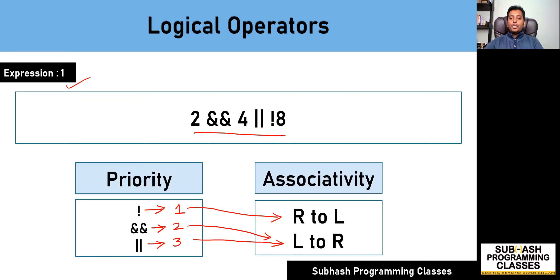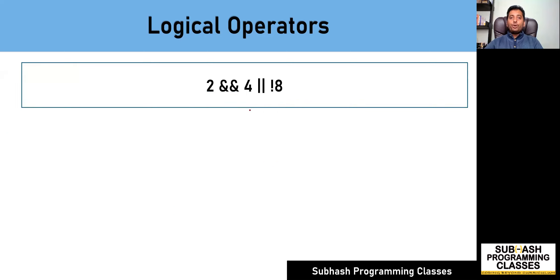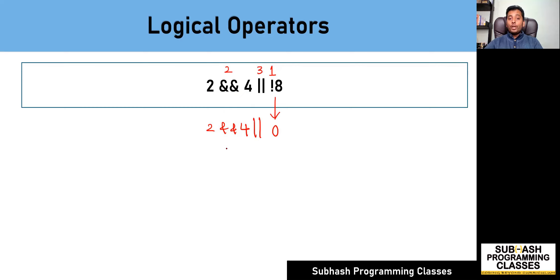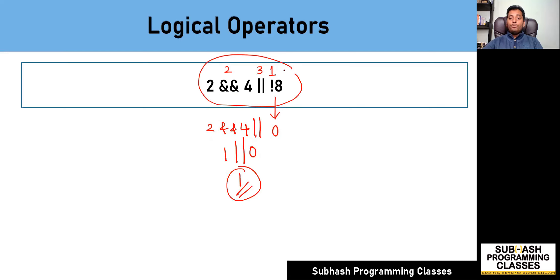Let me evaluate expression one: 2 AND-AND 4 OR with logical NOT of 8. Since NOT has the highest priority, I first evaluate NOT of 8 — a non-zero value — which gives 0. Now the expression becomes: 2 AND-AND 4 OR 0. Next, AND-AND has second priority, and non-zero AND-AND with non-zero gives 1. So now it's 1 OR 0. Finally, non-zero OR 0 gives a value of 1. So the answer for this expression is 1.